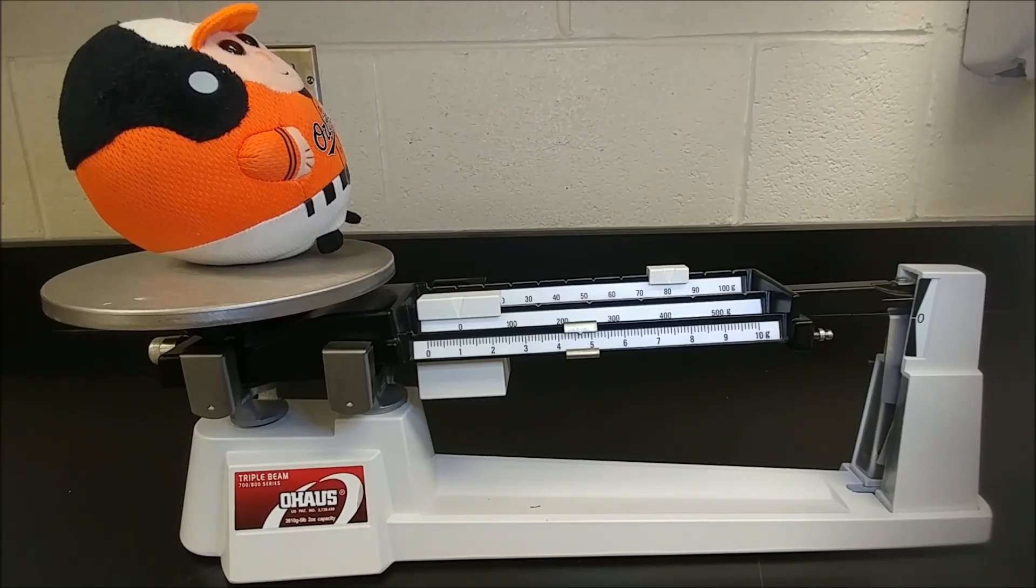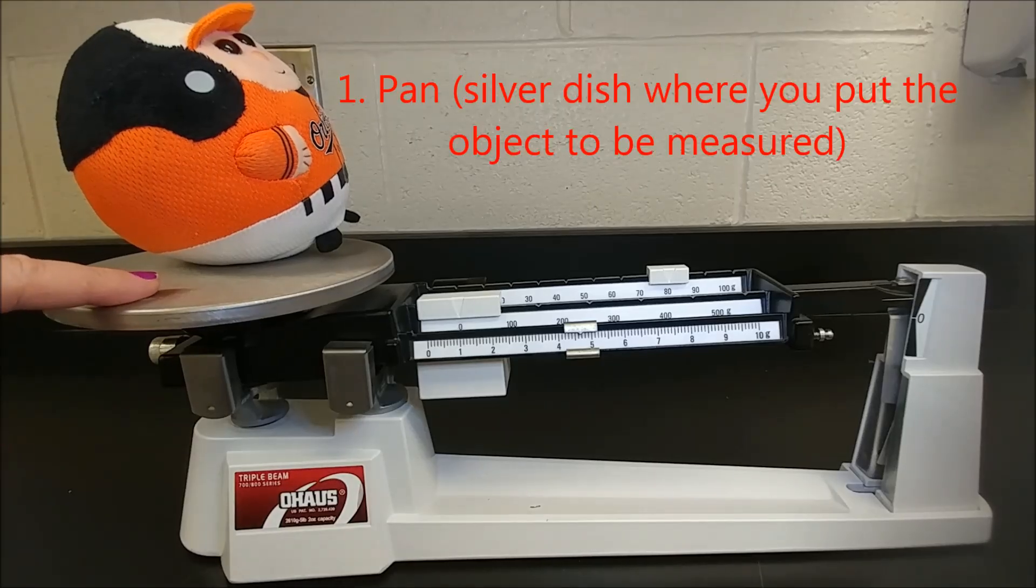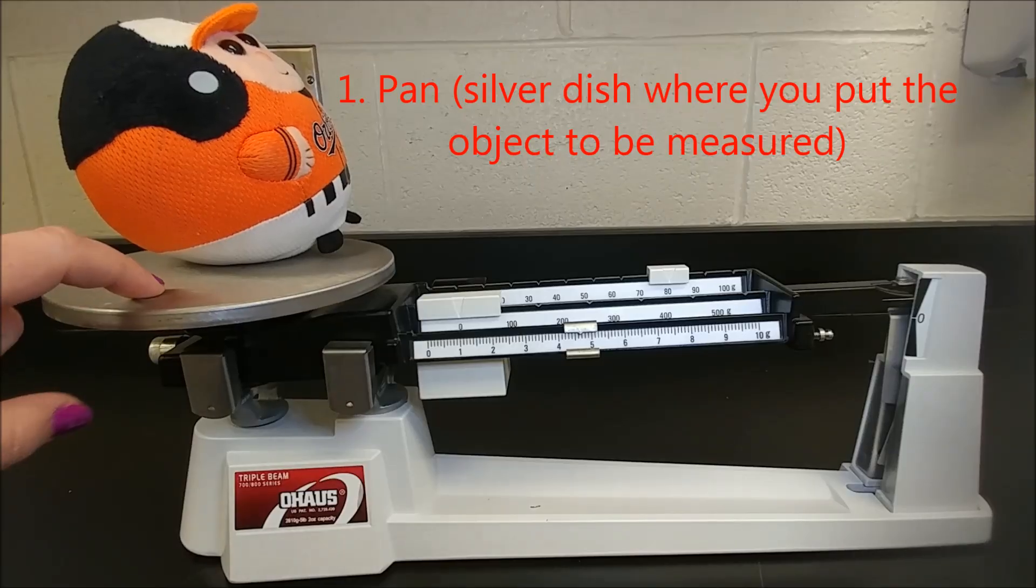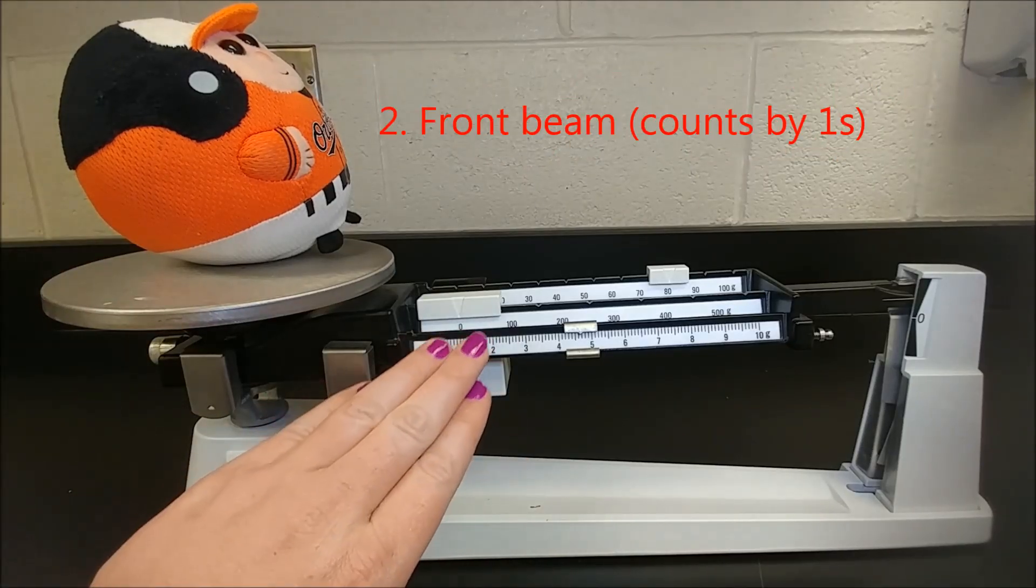There are six parts. This is the pan. The pan is where you place your object to be measured. You also have three beams.